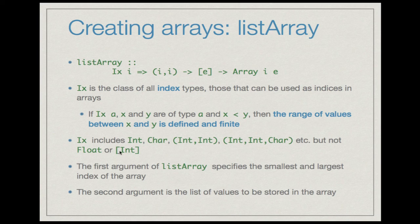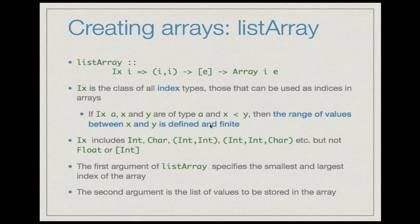But Ix does not include Float or [Int]. If you take two floating point values x and y with x < y, the range of values between them is not finite. Similarly, if you take the list [1] and the list [2], there are infinitely many lists in between — [1,2], [1,1,2], [1,1,1,2], etc. — all lie between the singleton list [1] and [2]. Therefore, [Int] cannot be used as an index type.